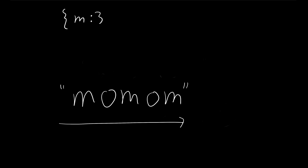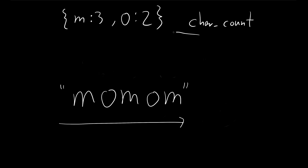First, we're going to scan through the whole string to get a dictionary of the counts — what we call a char count. So once we scan the whole string M-O-M-O-M, we're going to get a dictionary that looks like: M equals three, O equals two. That's our char count dictionary.